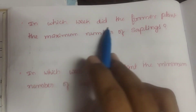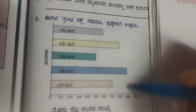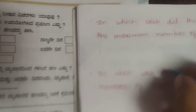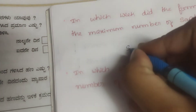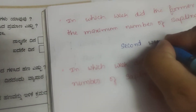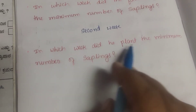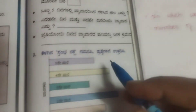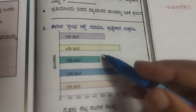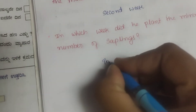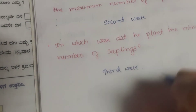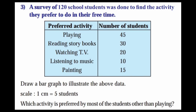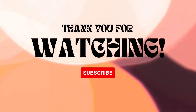In which week did the farmer plant the maximum number of saplings? The second week. In which week did he plant the minimum number of saplings? The third week. Thank you.